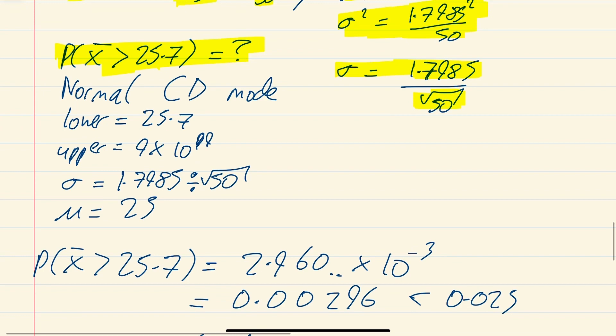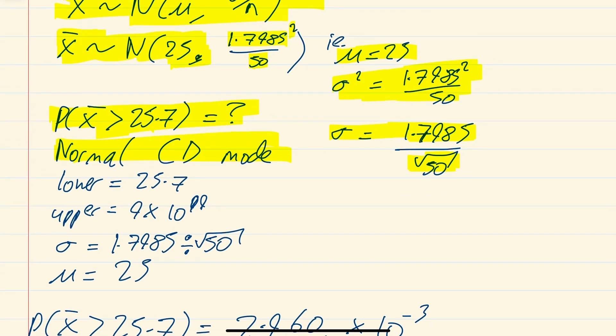Where we want to find this, you can do this on the new modern Casio ClassWiz calculators, the white ones with the white case. Using the normal CD mode on it, your lower bound, because we want this bit here in yellow, that's what we're looking for. On your normal CD, your lower value is 25.7. Your upper value is infinity, basically, but just do 9 times 10 to the power of 99. Your sigma is this thing, so how you do that on the calculator is sigma equals 1.7985 divided by the square root of 50, and your mu is 25. Bang those things all into your normal CD bit on your Casio ClassWiz calculator.